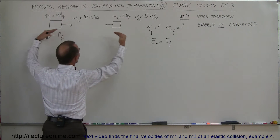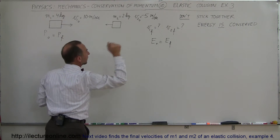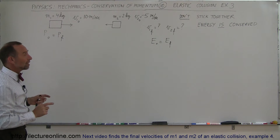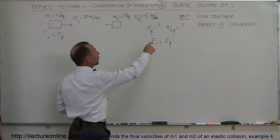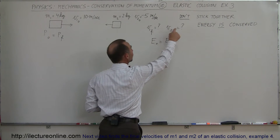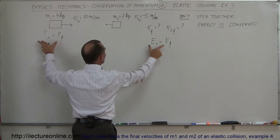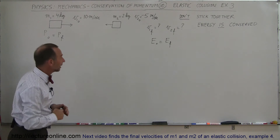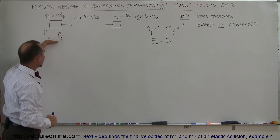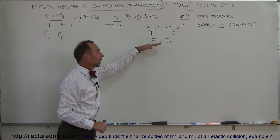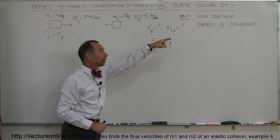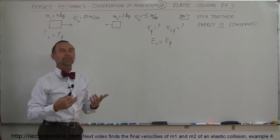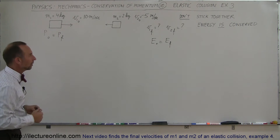Here there's a head-on collision: the objects don't stick together and energy is conserved. That means we have two unknowns — both V1 final and V2 final — and therefore we need two equations, which come from conservation of momentum and conservation of energy. This is a 100% elastic collision.